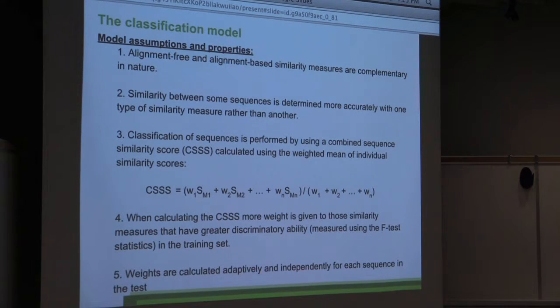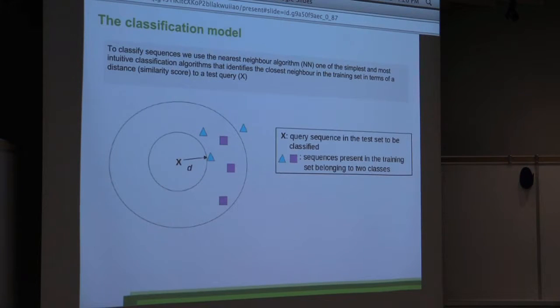So weights in this case are calculated adaptively and independently for each sequence in the test set. This is quite different from the existing models, since most of these models use weights that are either constant or there's no weight because they're actually not combining anything. So we use the simplest possible classification method, which is the nearest neighbor method. Basically it assigns the class shown in the picture as a triangle which is the closest in distance to the query sequence. The simplest possible classification model, which is usually also used as a benchmark when compared to other more sophisticated models like the SVM.